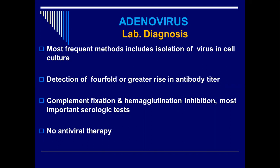We also have two other tests: the complement fixation test and the hemagglutination inhibition test. These are the most important serological tests used in virology for parainfluenza, influenza, and adenoviruses — one of these can be preferred.